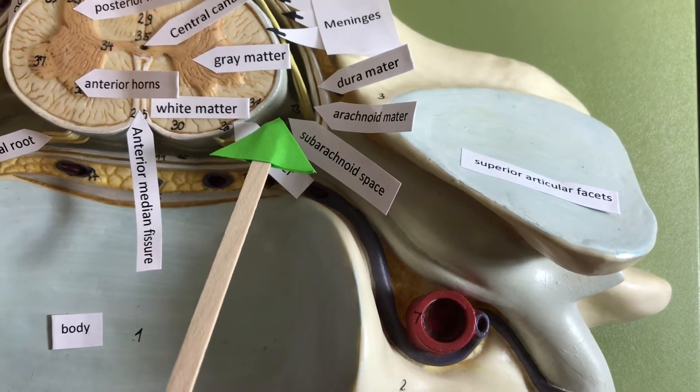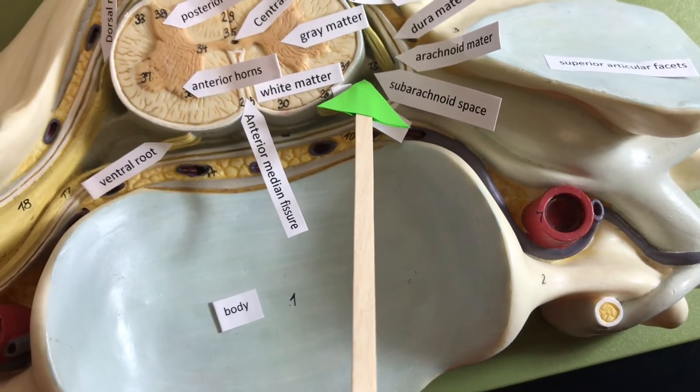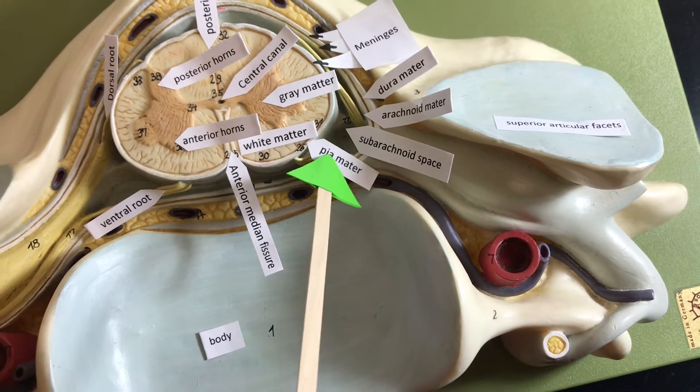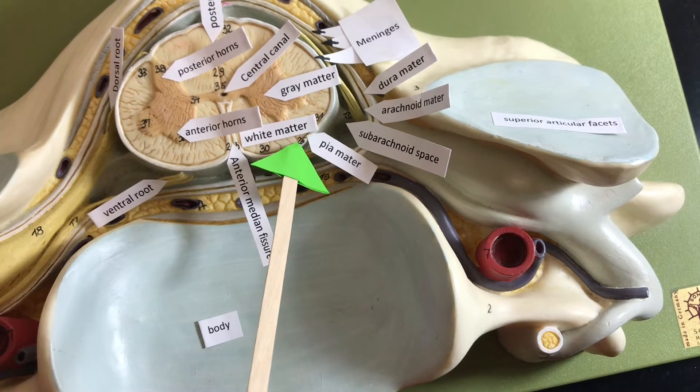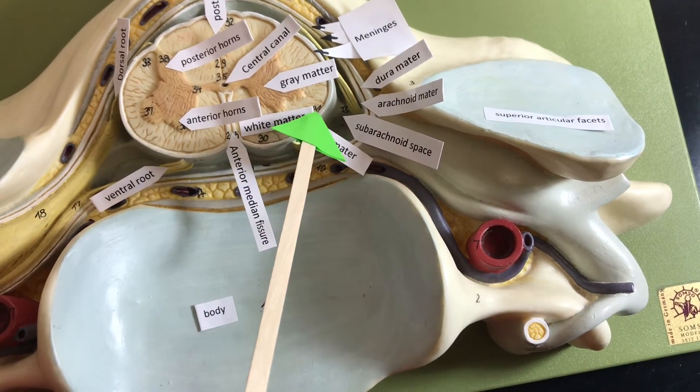Underneath the arachnoid layer we have the subarachnoid space. There's cerebral spinal fluid that flows through here. Here we have the pia mater. The pia mater is a very thin layer that covers the spinal cord.